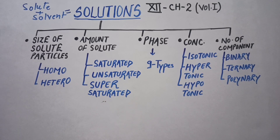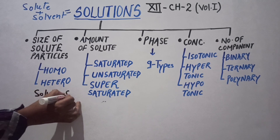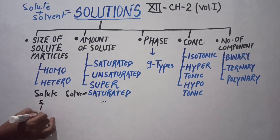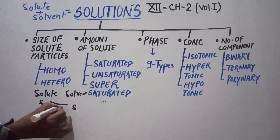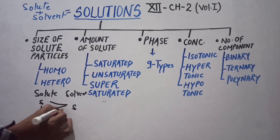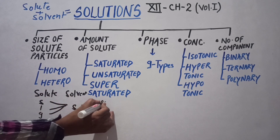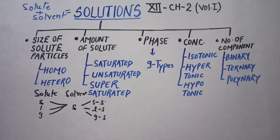The third category is phase dependent. Phase means solid, liquid, and gas. We have solute and solvent each being solid, liquid, or gas. So we get three categories when the solvent is solid: solid in solid, liquid in solid, and gas in solid. Then three more when solvent is liquid: solid in liquid, liquid in liquid, and gas in liquid.